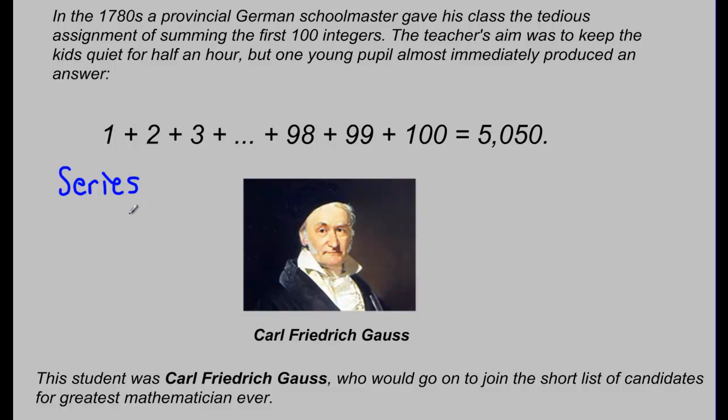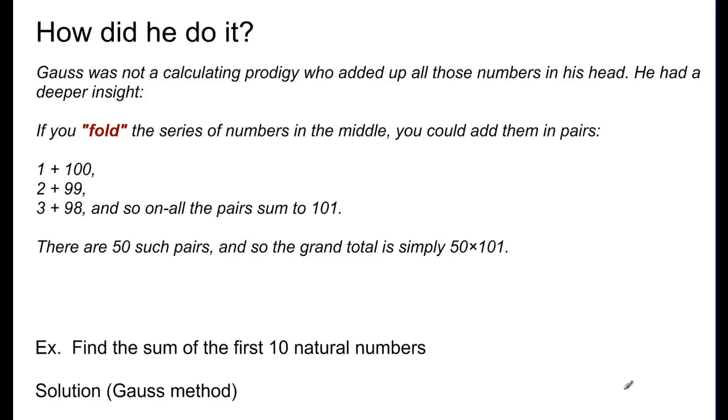These are specifically arithmetic series, because each number is one more than the number before it. Let's see how Gauss came up with 5,050 so quickly. First of all, he was not a mathematical wizard. What he had was an idea.